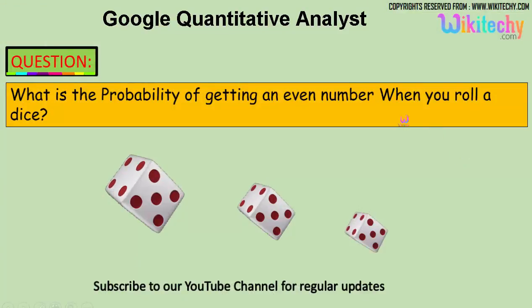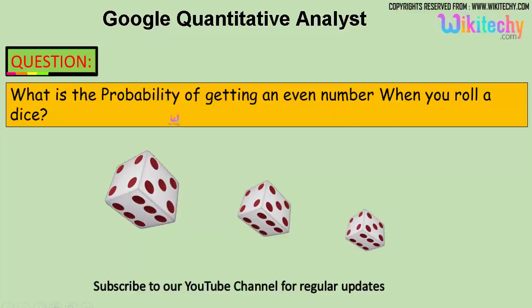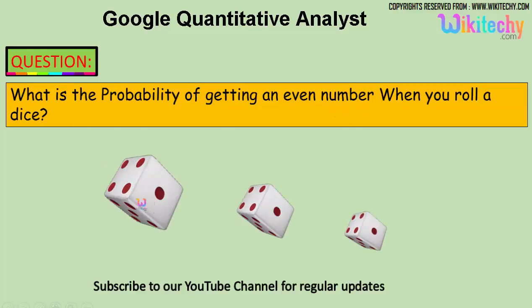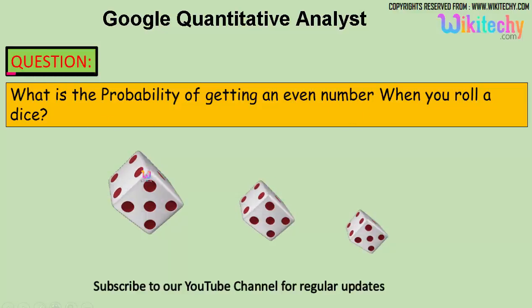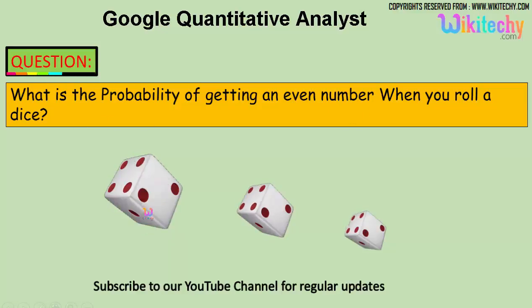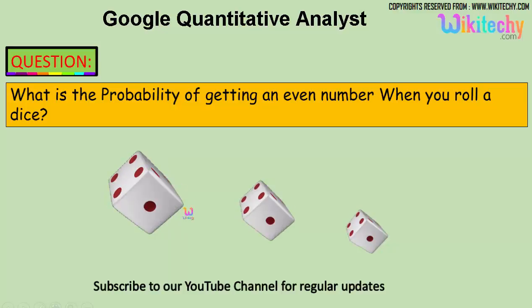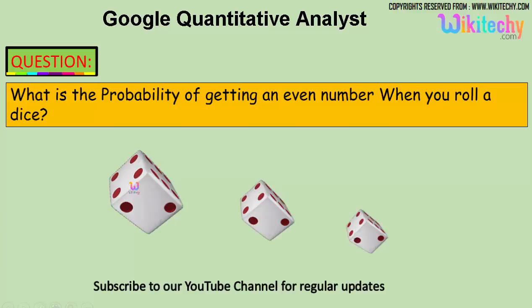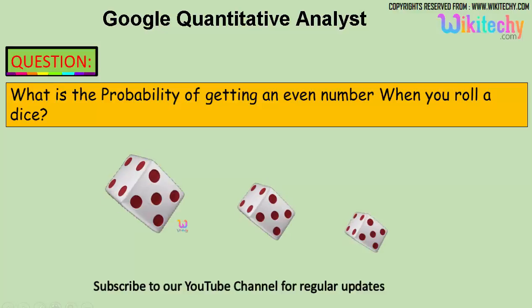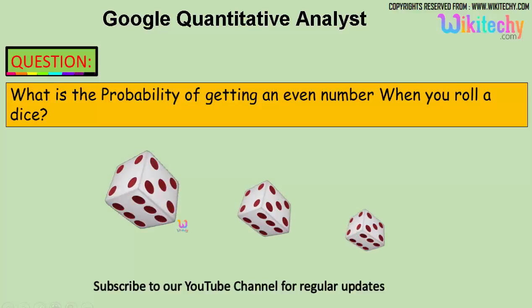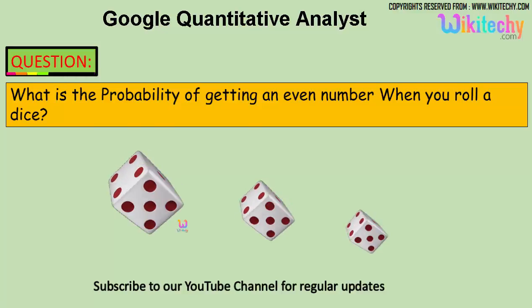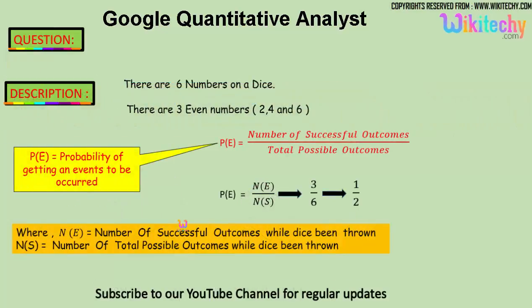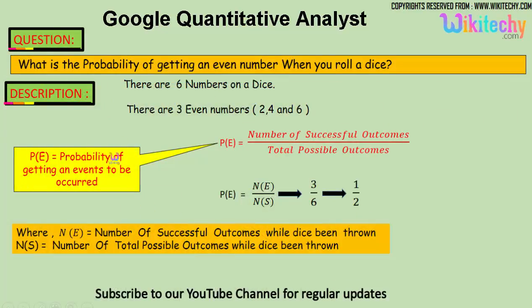So what is the probability of getting an even number when you roll a dice? A dice will have six numbers: one, two, three, four, five, and six. We got six numbers, and what is the probability of getting an even number? That is the question. The answer is: there are six numbers on a dice.